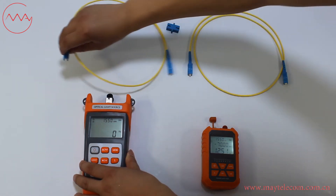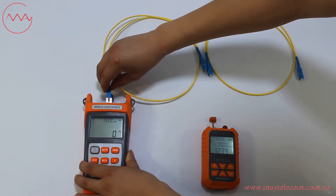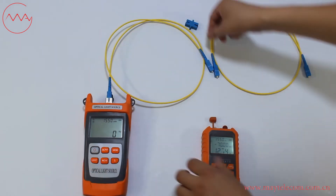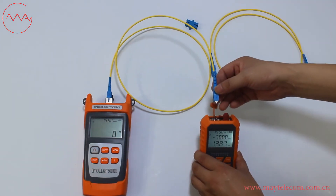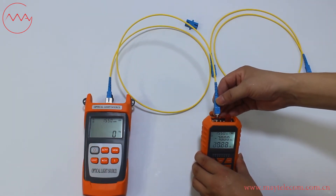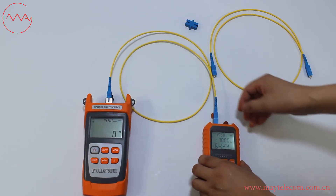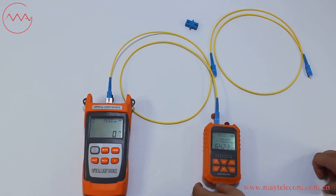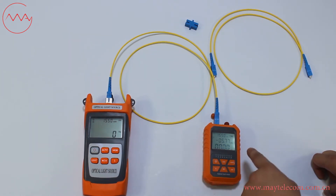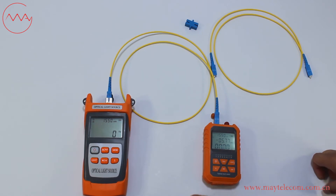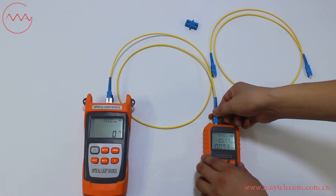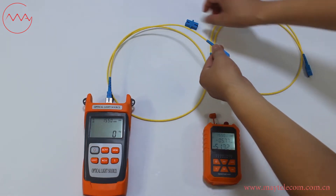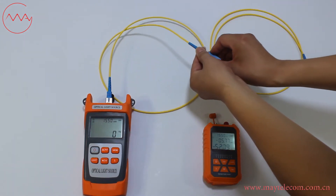Connect the reference patch code with the optical light source and the OPM port of the optical power meter. Press the reference button to set 0 dB for relative power.